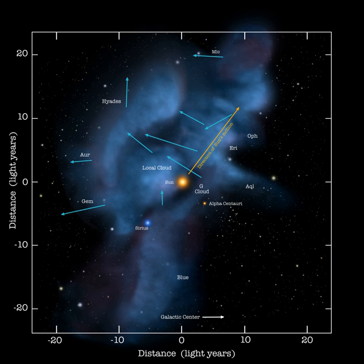The solar system is located within a structure called the Local Bubble, a low-density region of the galactic interstellar medium. Within this region is the Local Interstellar Cloud, a region of slightly higher hydrogen density.